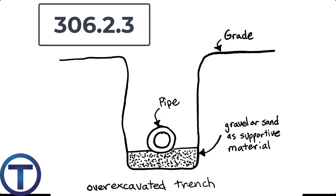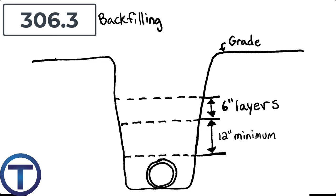306.2.3 soft load bearing deals with organic soils — say you dig it up and it's real light and fluffy, not strong enough to support pipe well, and it's possible they could create a belly. We remove that earth and refill with something supportive. 306.3: when it's time to backfill, the requirement is to fill in above the pipe 12 inches first — that protects the pipe as we're compacting. Then above that, we fill in with 6-inch lifts, compacting each 6 inches until we get to the top. It's really important to compact properly rather than pushing all the spoil pile in at once.